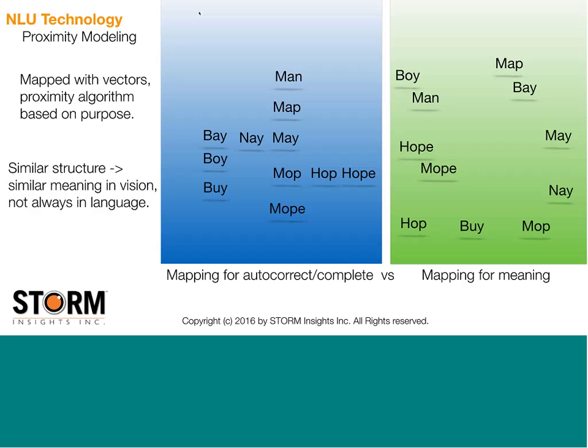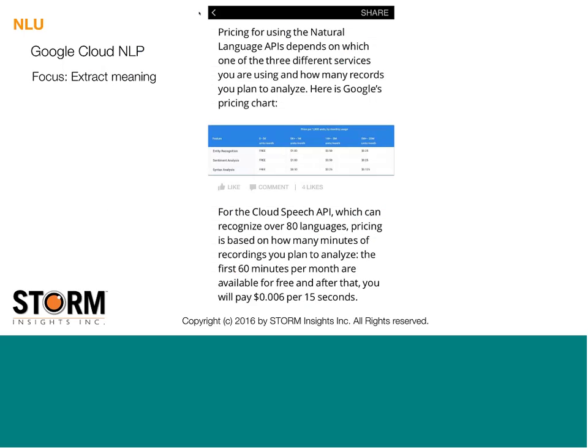Within natural language understanding right now, there are a lot of options if you're interested in getting started and adding NLU to an application. Google has a number of APIs for natural language to take what you have and get entity recognition, sentiment analysis, and syntax analysis — this is typical of what's out there today. Up to 5,000 units a month are free. It's really a good time to be experimenting with these things.